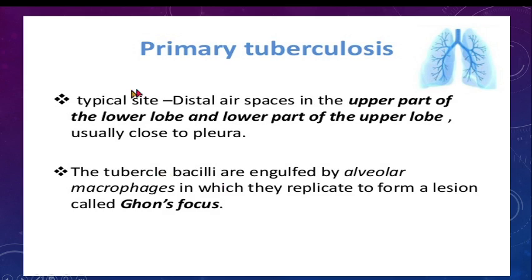Now coming to our main topic — primary complex. Tuberculosis usually occurs in the distal air spaces in the upper part of the lower lobe and the lower part of the upper lobe. The tubercular bacilli are engulfed by alveolar macrophages, in which they replicate to form a lesion called Ghon's focus.